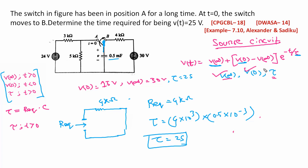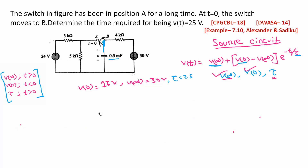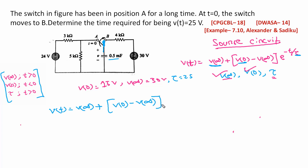Now we plug all values into the main equation. We have V0 equals 15V, V-infinity equals 3V, and tau equals 2 seconds. The equation is: Vt equals V-infinity plus (V0 minus V-infinity) times e to the power minus t by tau. Substituting: Vt equals 3 plus (15 minus 3) times e to the power minus t over 2.